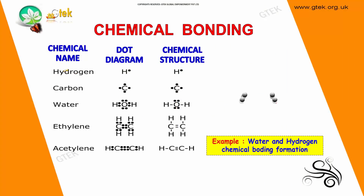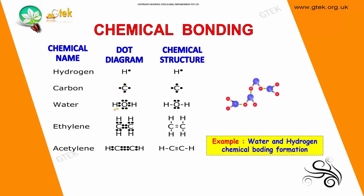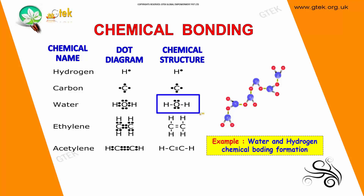Here is the chemical name, the dot diagram, and the chemical structure. You can see hydrogen, which has only one electron, and its chemical structure is shown here, whereas carbon holds four electrons. Water contains H-O-H. Oxygen has six valence electrons and hydrogen has one valence electron. These are oxygen's electrons and hydrogen forms these bonds, giving the chemical structure shown.